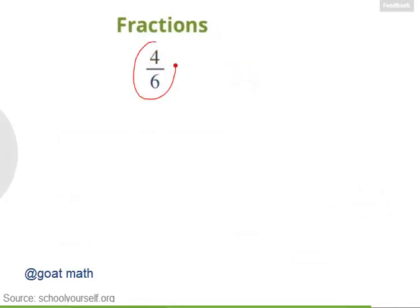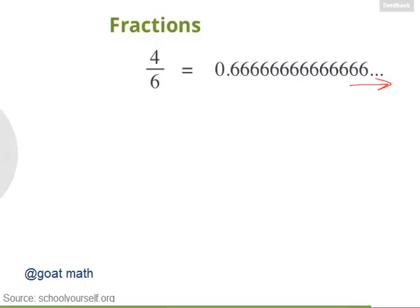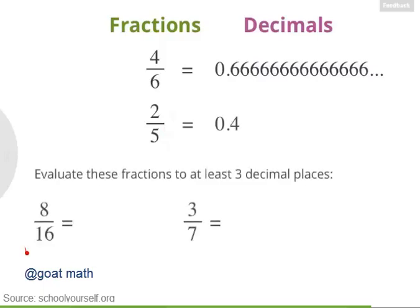As we said, 4 sixths is an example of a fraction. But if you take 4 and divide it by 6 on your calculator, you'll get 0.66666666 and so on, where the 6's go on forever. This is the same thing as 4 sixths — it's just written in decimal form. Some fractions like this go on forever, while others, like 2 fifths, don't. Divide 2 by 5 on your calculator and you'll see it's equal to 0.4. Try evaluating these two fractions to at least three decimal places.